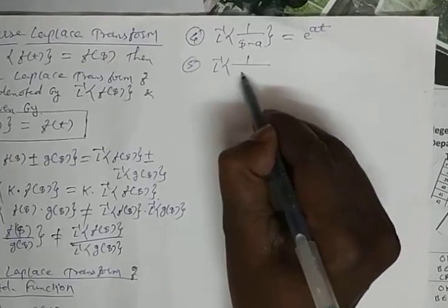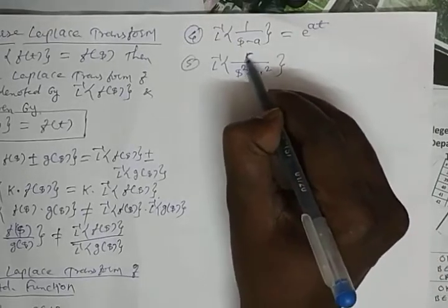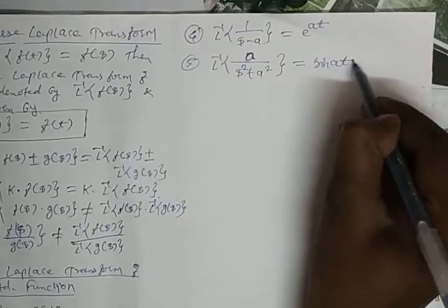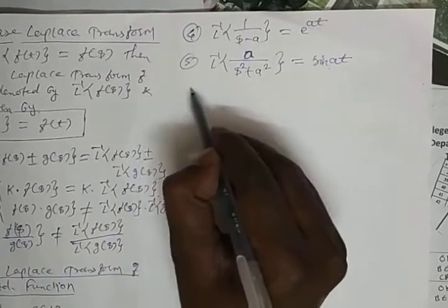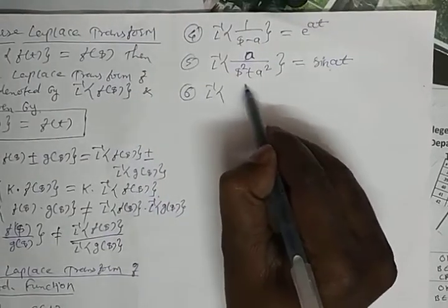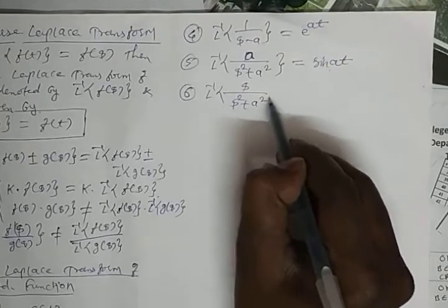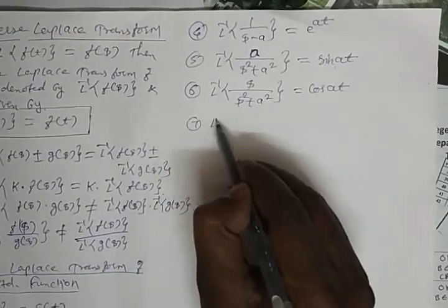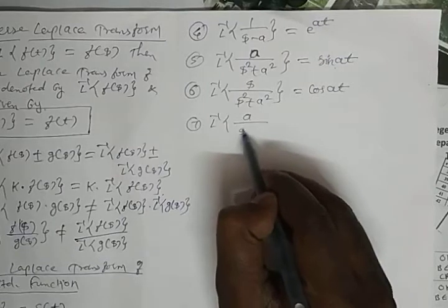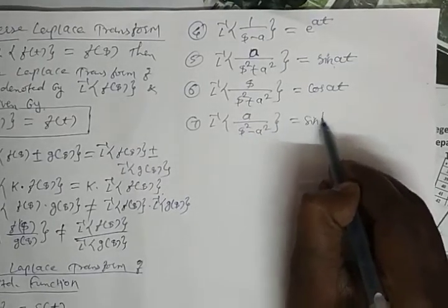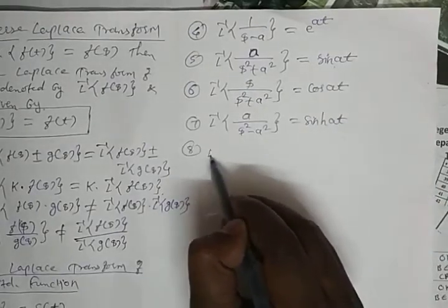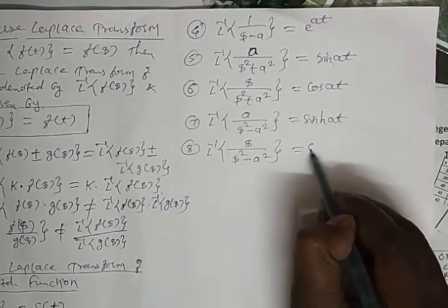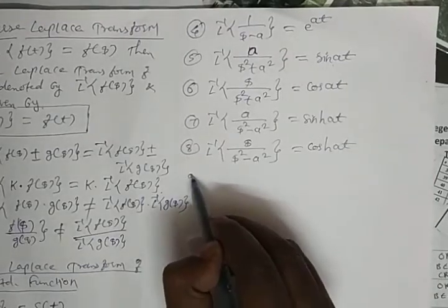L⁻¹{a/(s²+a²)} = sin(at), and L⁻¹{s/(s²+a²)} = cos(at). L⁻¹{a/(s²−a²)} = sinh(at), and L⁻¹{s/(s²−a²)} = cosh(at).